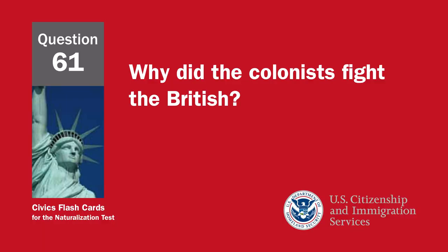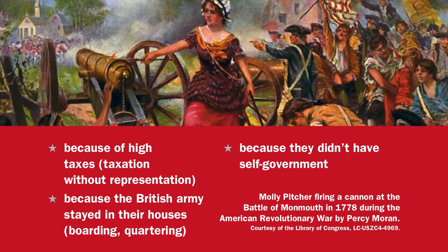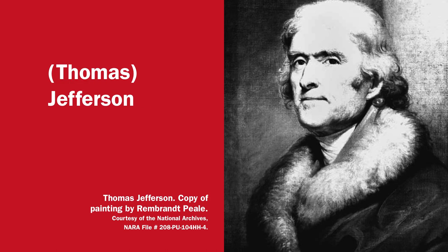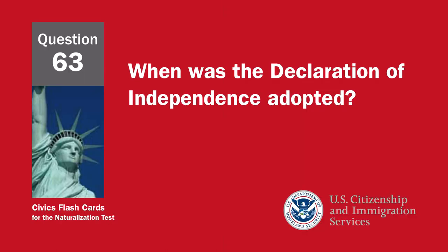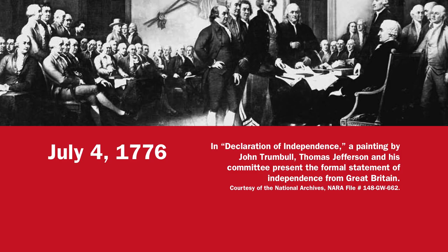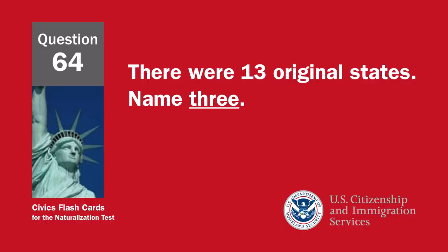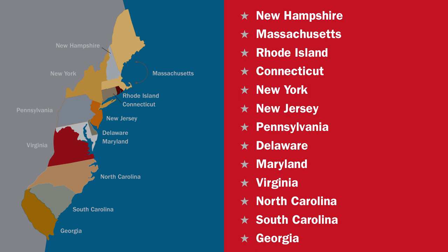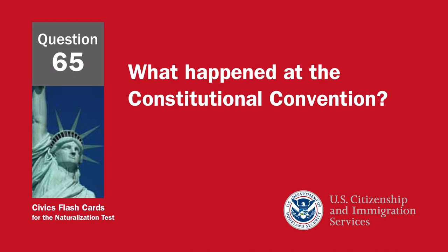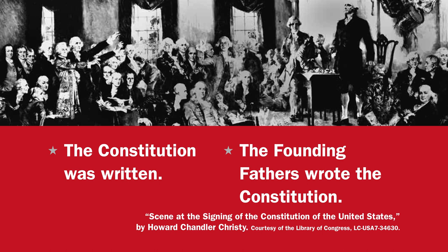Why did the colonists fight the British? Because of high taxes, taxation without representation, because the British army stayed in their houses — boarding or quartering — or because they didn't have self-government. Who wrote the Declaration of Independence? Thomas Jefferson. When was the Declaration of Independence adopted? July 4th, 1776. There were 13 original states — name three: New Hampshire, Massachusetts, Rhode Island, Connecticut, New York, New Jersey, Pennsylvania, Delaware, Maryland, Virginia, North Carolina, South Carolina, Georgia. What happened at the Constitutional Convention? The Constitution was written; the Founding Fathers wrote the Constitution.